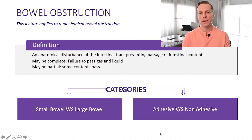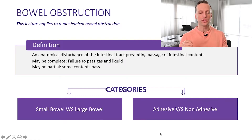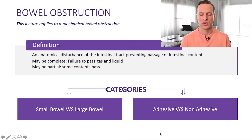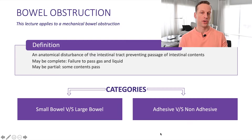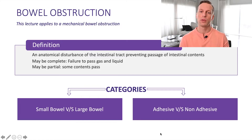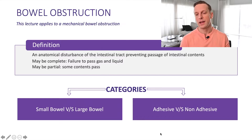When we're talking about a mechanical bowel obstruction, we're really talking about a physical disturbance — an anatomical disturbance — that's preventing the passage of contents through the gastrointestinal tract. These bowel obstructions might be complete, in the sense that no gas or liquid passes, or might be incomplete, in the case that some contents might pass.